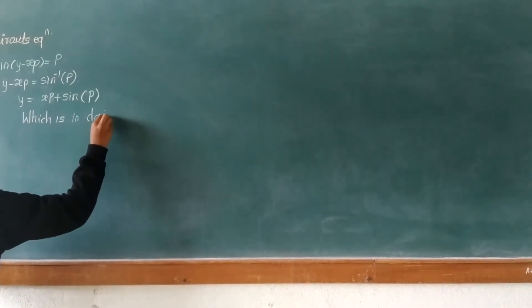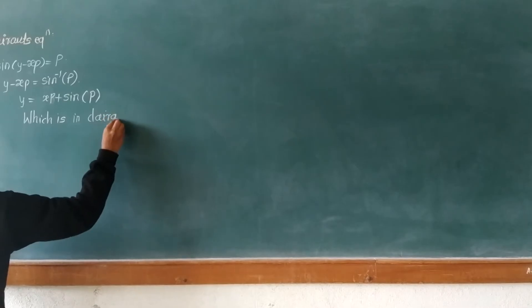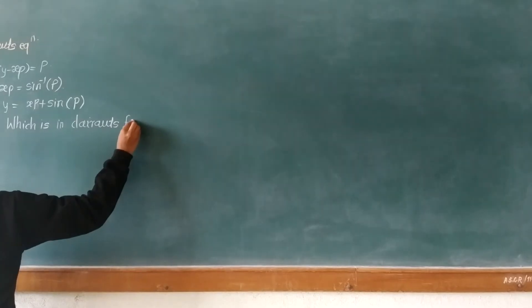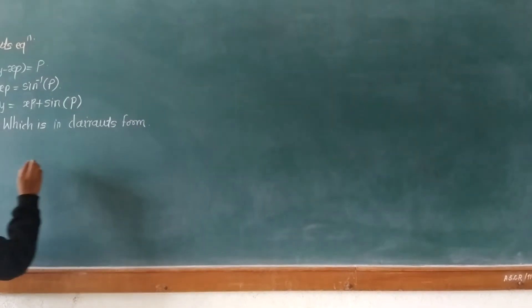On simplifying further, we get y equals px plus sine inverse of p, which is in the Clairaut's form.